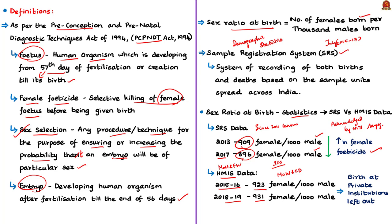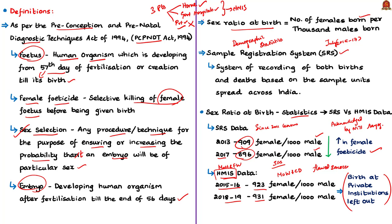There are three possible places where a woman can give birth: at home (home delivery), at government hospitals (institutional delivery), and at private hospitals (private institutional delivery). The author argues that the HMIS is a fundamentally flawed source because it largely considers only home deliveries and births in government institutions, leaving out births in private institutions. Therefore, the HMIS data does not represent the entire country.